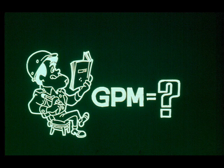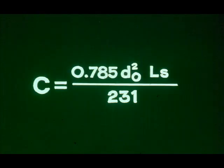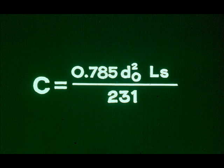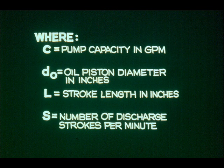You may also need to calculate the capacity pumping rate of a steam-driven reciprocating pump. Common capacity units are gallons per minute, abbreviated GPM. You can calculate pump capacity by the formula: C equals 0.785 times D sub O squared times L times S over 231. Where C equals pump capacity in gallons per minute, D sub O equals oil piston diameter in inches, L equals stroke length in inches, and S equals number of discharge strokes per minute.